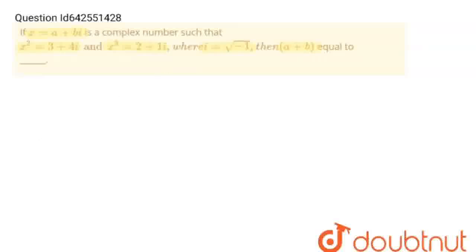So we can write this complex number x is equal to x cube upon x square. This x cube upon x square will become x, and x according to question is a plus iota b.